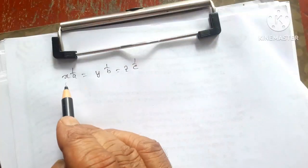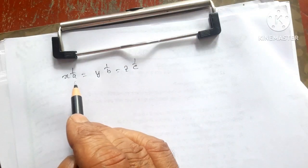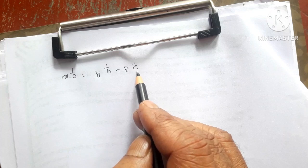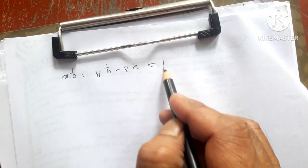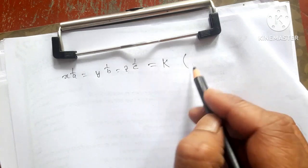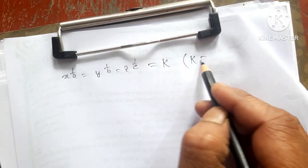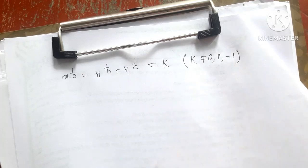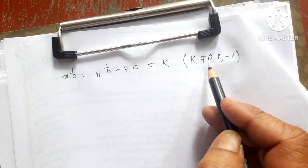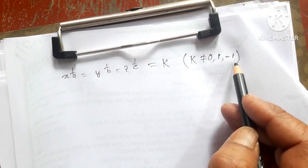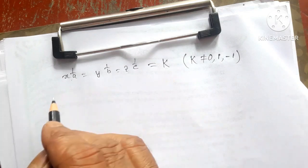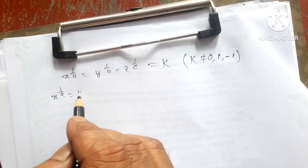So h is how to do it. h is 2, x to the bar 1 by a, y to the bar 1 by b, y to the bar 1 by c. h is 2, k is 0, 1 minus 1. h is 0, 1 minus 1. So h is 3, a plus b, y to the bar 1 by a, k.